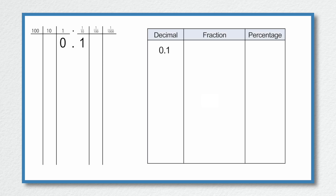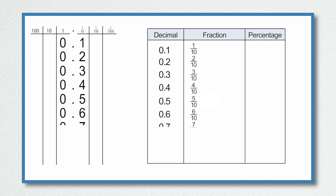We'll begin with 0.1, which means 1 tenth — we've got 1 in the tenth column. So 0.1 is equal to 1 tenth. Similarly, 0.2 is two tenths, because there are two lots of one tenth. We can continue this with 0.3, 0.4, 0.5, all the way down to 0.9, which we can write as 9 tenths. So we have 9 fractions, all written as tenths.